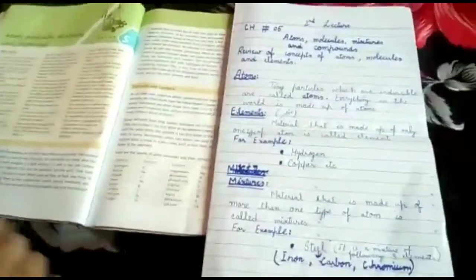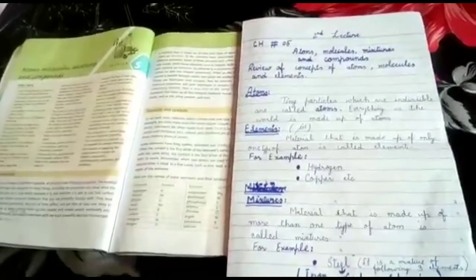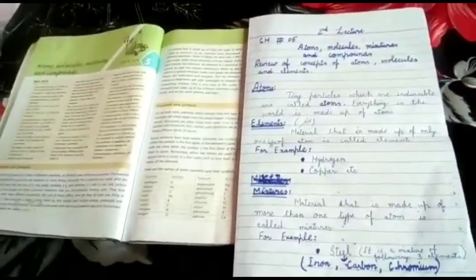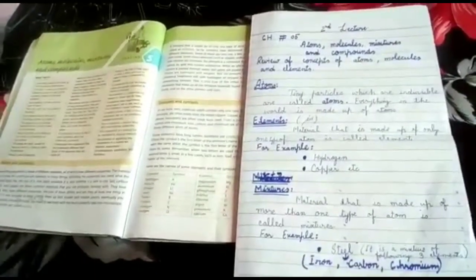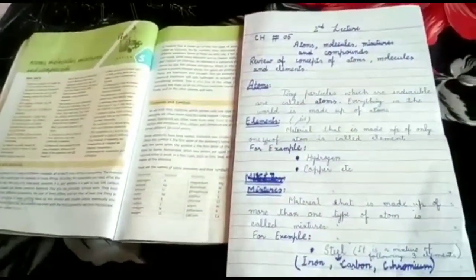Today we will discuss about elements and symbols, which is the second lecture of this chapter. Before this, I will recall the concept of atoms, elements and mixtures. Atoms are the tiny particles which are indivisible - aise chote zarraat jinko hum mazheed nahi tor sakte.